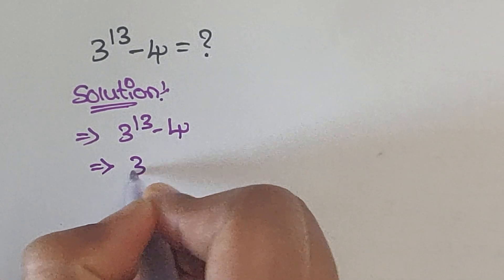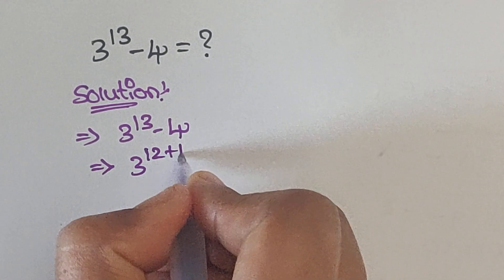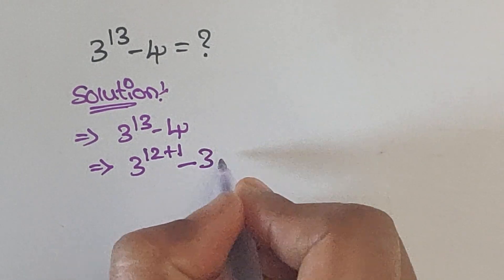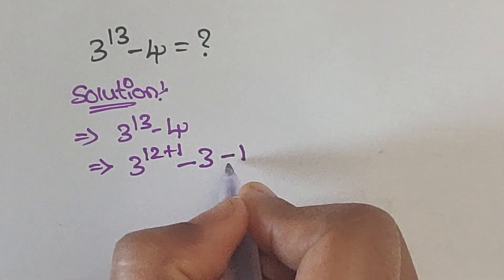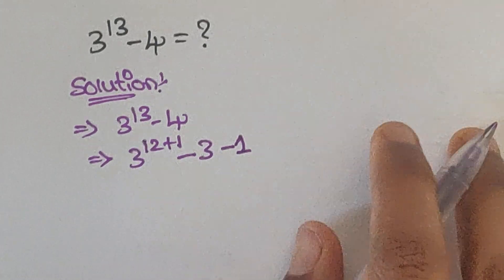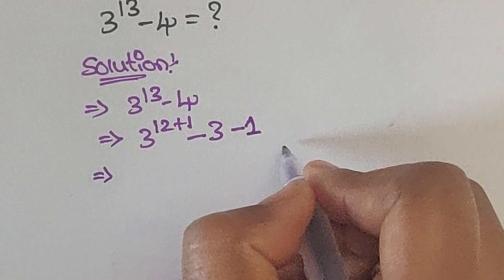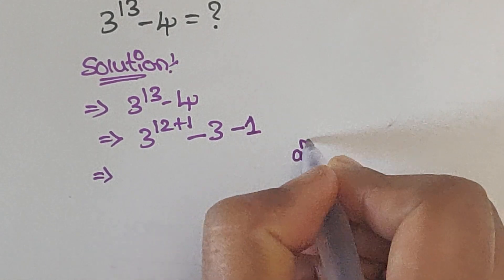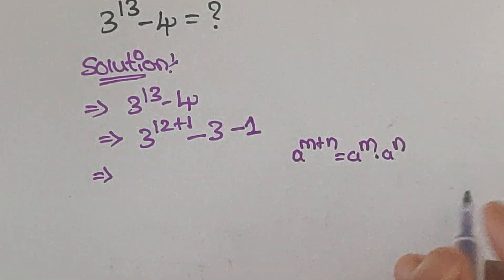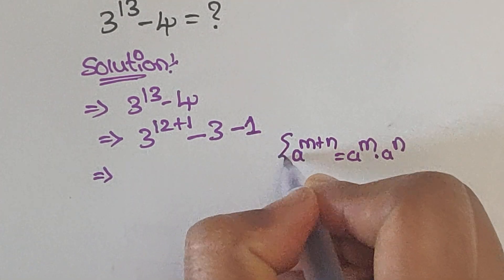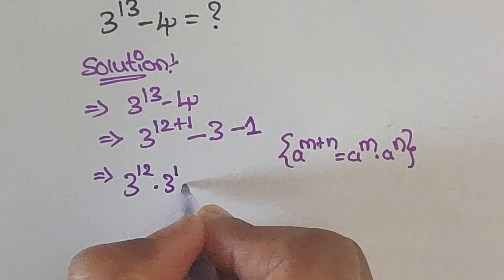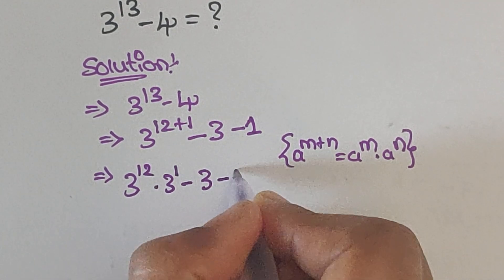In the next step, 3 to the power of 13 — we can write it as 12 plus 1, and minus 4 we can write as minus 3 minus 1. Now we can apply the formula: a to the power of m plus n equals a to the power of m times a to the power of n. Using this formula, we can write 3 to the power of 12 times 3 to the power of 1, minus 3, minus 1.